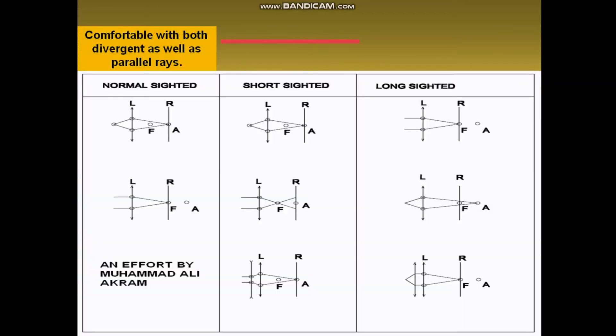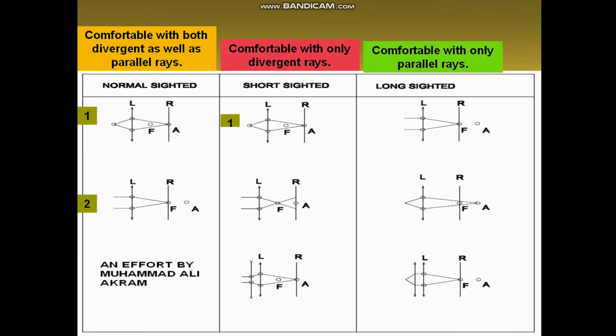Summary: I have made a worksheet for you. If you have understood the concept, you can try out this worksheet yourself. It shows the position of the lens and the position of the retina, with the lens and retina shown in each diagram. The first two diagrams in the first column are about the normal sighted person.